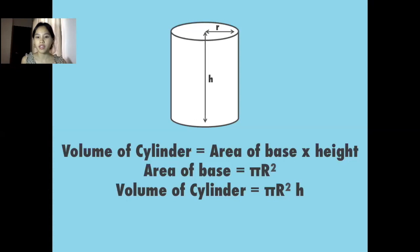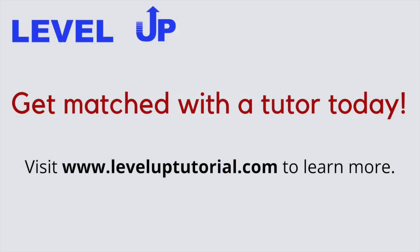What if we have a different shape that isn't a rectangular prism? What if we have a cylinder instead? What we need to know is the formula to get the volume of a cylinder. And that is the area of the base times the height. Similar to when we're solving for the volume of a rectangular prism. So the area of the base is the area of the circle since the base of a cylinder is a circle. So the area of the base is πr² as we discussed earlier. And then you just multiply the area of the base to the height. Therefore, the volume of a cylinder has a formula of πr² times the height.